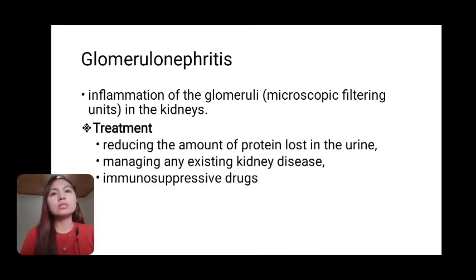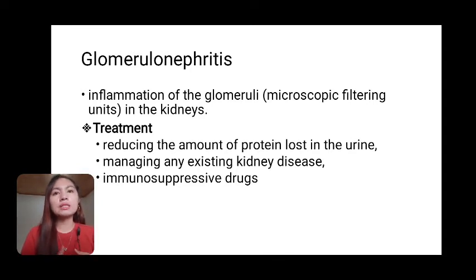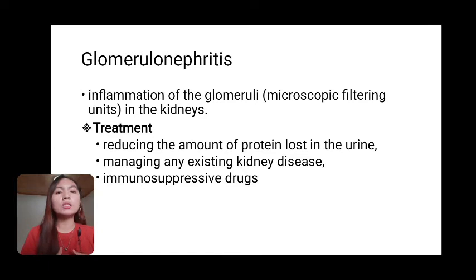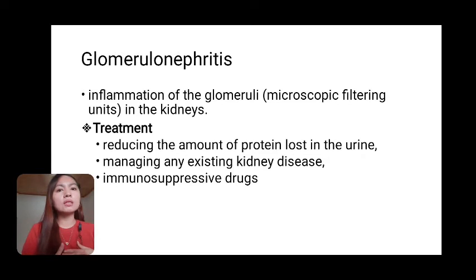Glomerulonephritis is an inflammation of the glomeruli, the microscopic filtering units in the kidneys, resulting in excessive loss of protein in the urine, or proteinuria. Treatment involves treating any underlying disease, reducing the amount of protein lost in the urine, managing existing kidney disease, and giving immunosuppressive drugs to reduce formation of immune complexes. If untreated, the disease can lead to chronic kidney failure.